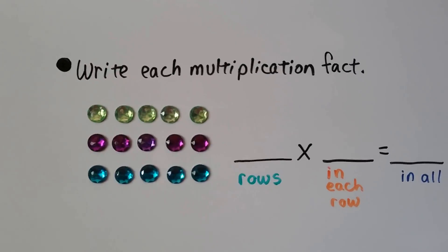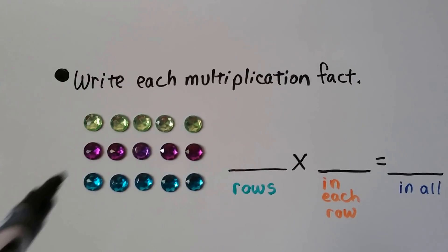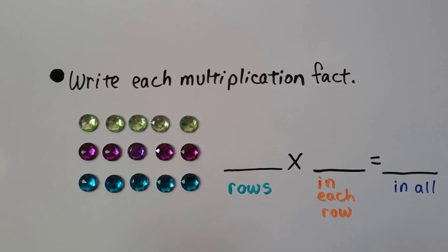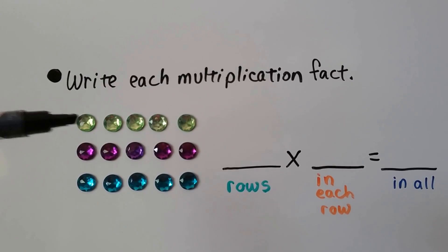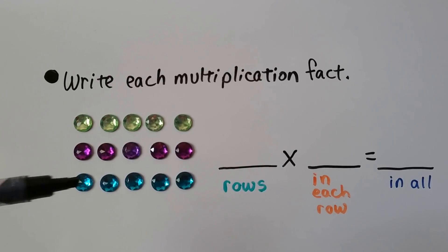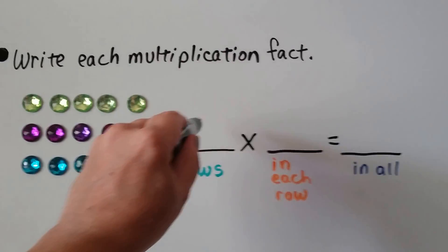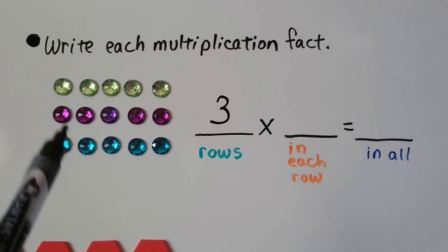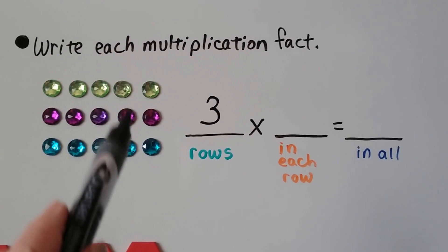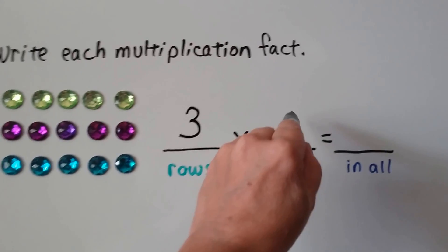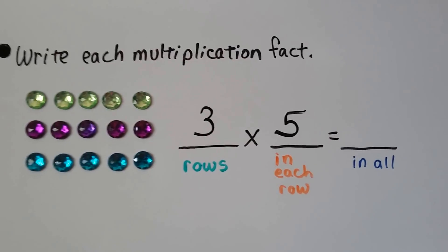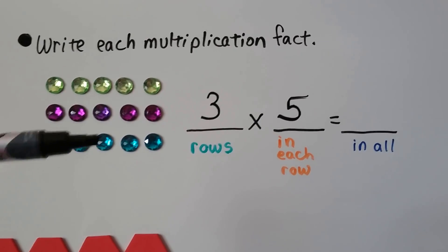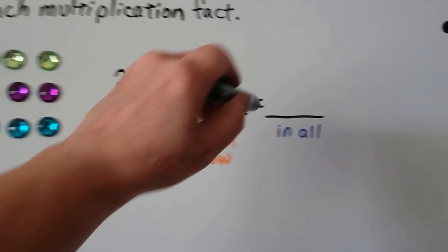Write each multiplication fact — what does this array tell us? How many rows are there? Remember, rows go across. There are 1, 2, 3 rows. And how many are in each row? 1, 2, 3, 4, 5. So how many are there in all? We can skip count by 5s: 5, 10, 15. There are 15 in all.